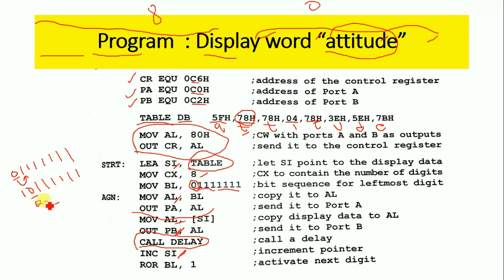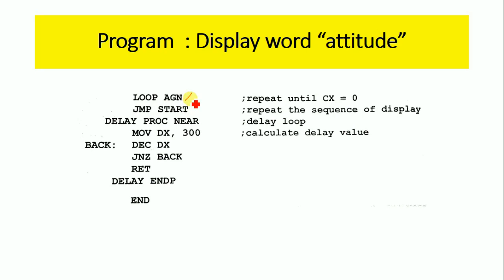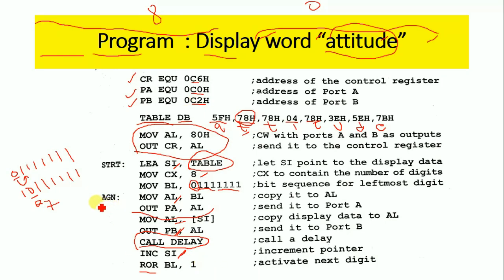The 'LOOP AGN' instruction decrements CX and repeats the loop while CX is not zero. The program repeats the sequence of outputting to Port A and Port B. After displaying T on display 7, SI increments again to the next 78H value, BL is rotated right again making the 0 move to the Q6 position, and transistor Q6 is turned on to display T on the sixth display.